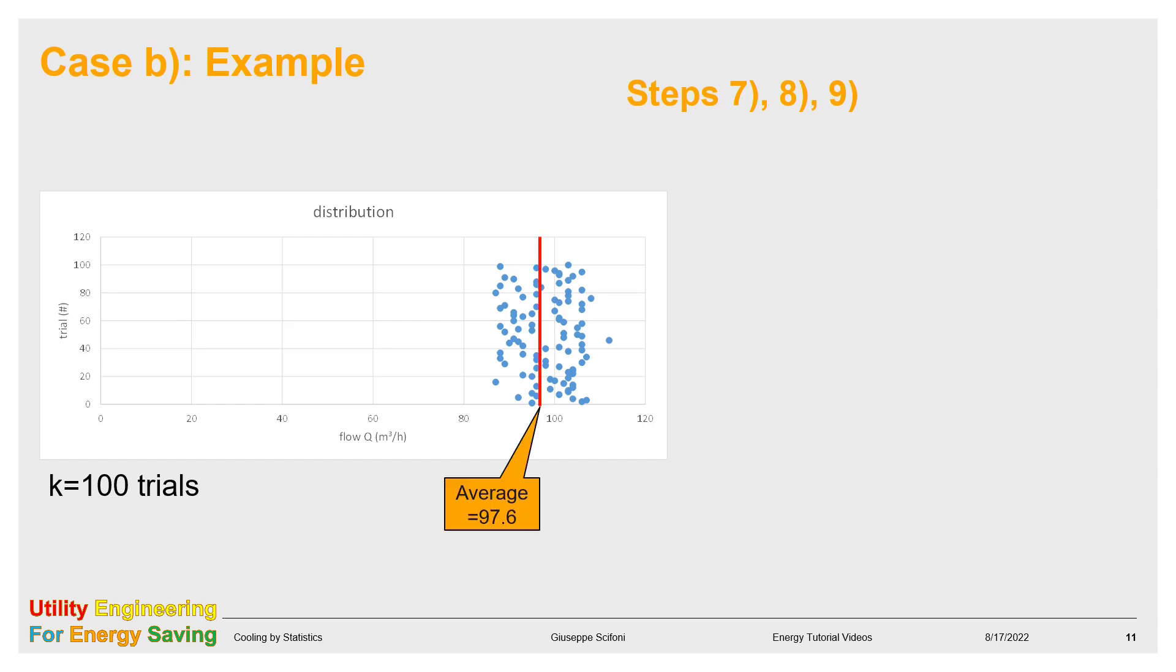Finally, we build the average and the standard deviation of all the found results. The quantity to be used for the sizing is the average plus standard deviation. In the example, we get 103.7 cubic meter per hour, and we have used 100 trials.